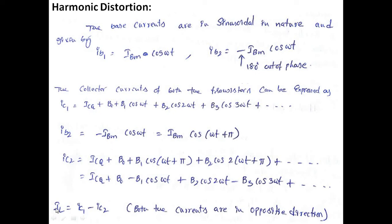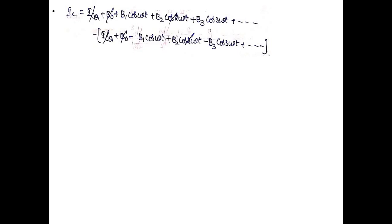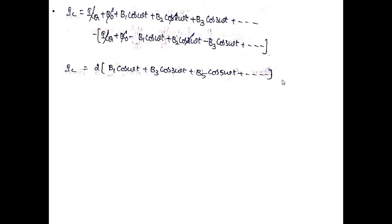The load current IL = IC1 - IC2, since both currents flow in opposite directions through the load. Substituting and simplifying, all DC components cancel each other, and we are left only with AC components: 2[B1·cos(ωt) + B3·cos(3ωt) + B5·cos(5ωt) + ...]. There is no DC component, which reduces DC power dissipation.